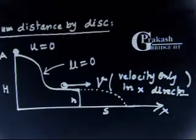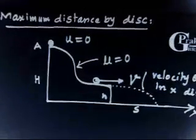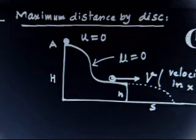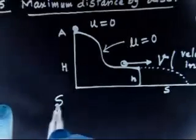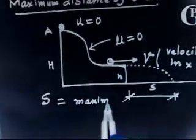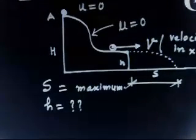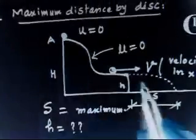At this point, velocity will be only in the x-direction, so there will be no y-component. The question asks: what must be the height of the horizontal portion, small h, to ensure the maximum distance s covered by the disk? So I want to maximize the horizontal distance s — what should small h be?